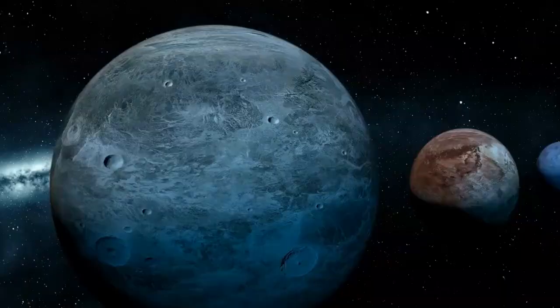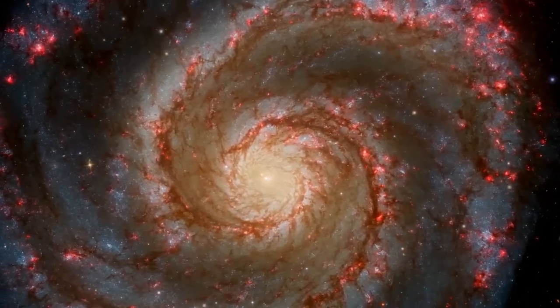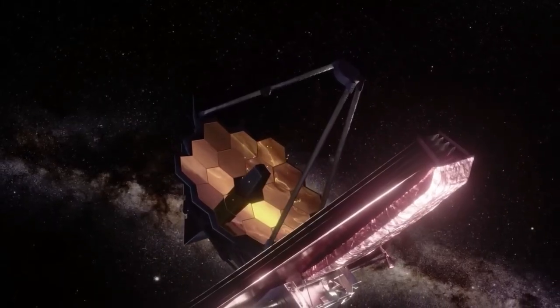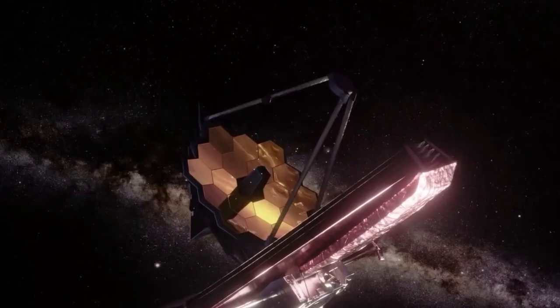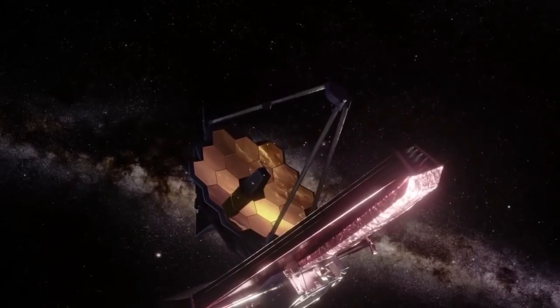Imagine standing in your backyard with this trampoline set up. The bowling ball creates a deep depression. Any marble you roll nearby inevitably curves toward it. Now scale this up to cosmic proportions. Galaxies and stars create similar depressions in space-time, bending light that passes nearby.